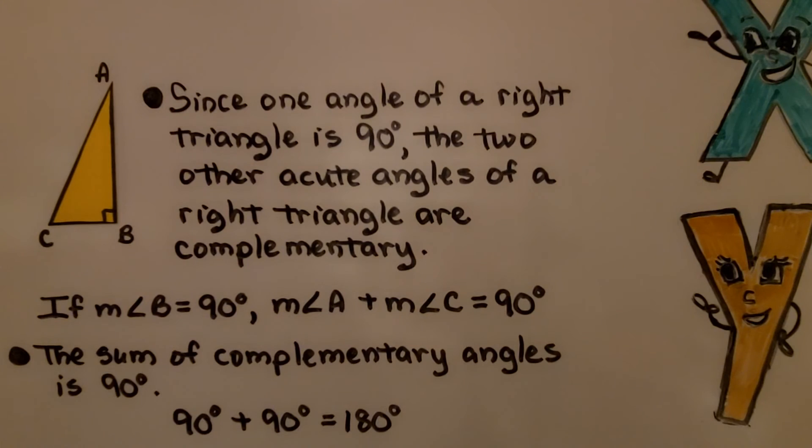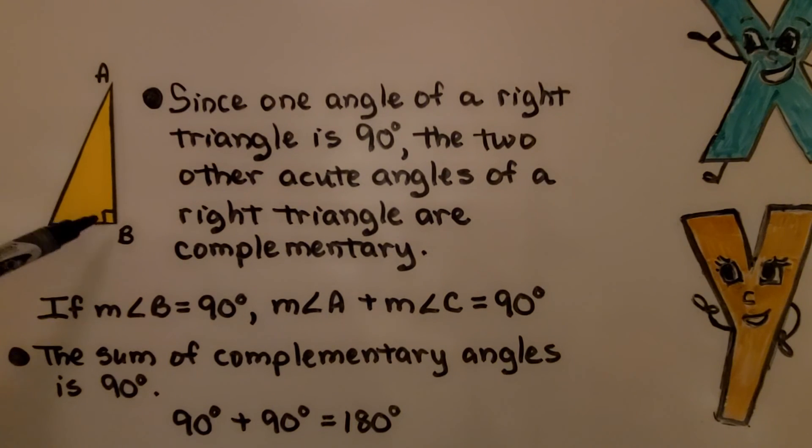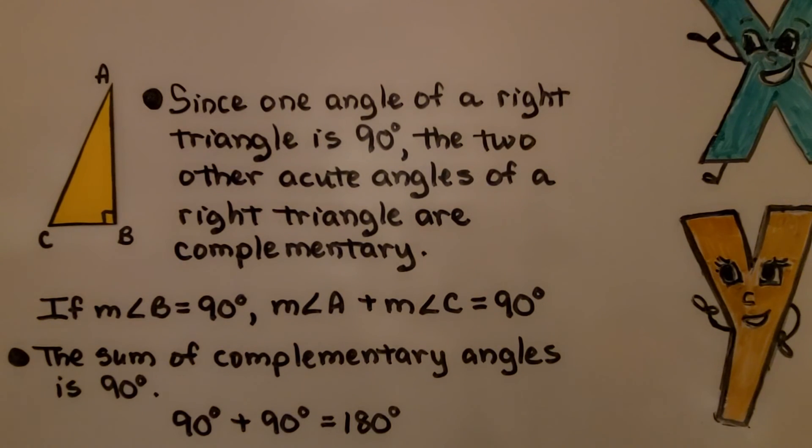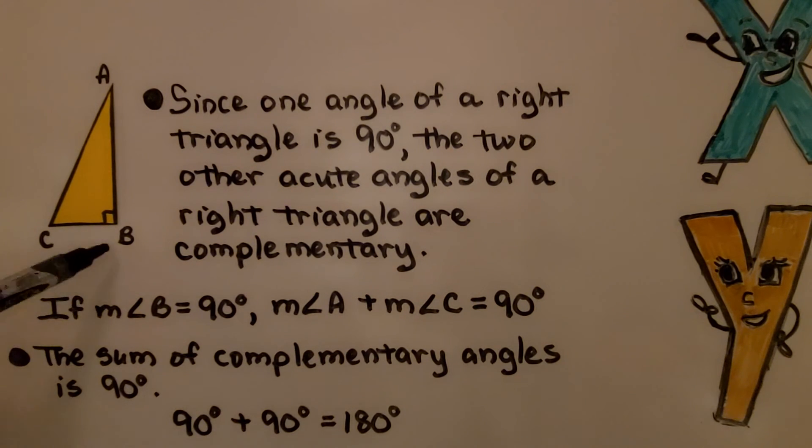Since one angle of a right triangle is 90 degrees, the two other acute angles of a right triangle are complementary. If the measure of angle B is 90 degrees, then the measure of angle A plus the measure of angle C is equal to 90 degrees.